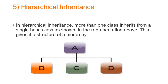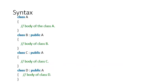Hierarchical inheritance: more than one class inherited from a single base class is known as hierarchical inheritance. In the figure, A is the base class, and it is inherited by B, C, and D respectively. The syntax shows A as the base class, B as a derived class publicly derived from A, C also as a derived class with A as the base class, and D as another derived class inherited from A.